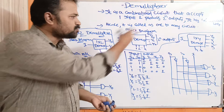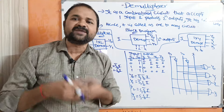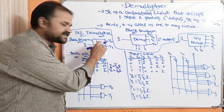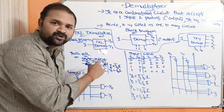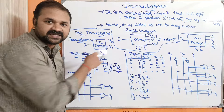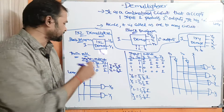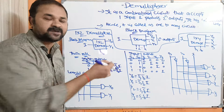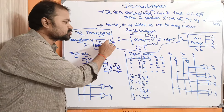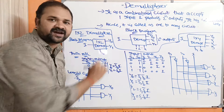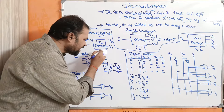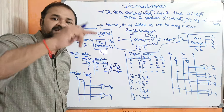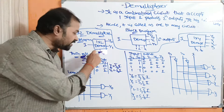Let us discuss about the 1×2 demultiplexor. This is the block diagram of the 1×2 demux. It accepts one input and produces two outputs: y0 and y1. Here we have only one selection line. Why? Because we have two outputs, and we can write 2 as 2^1, so we have one selection line.